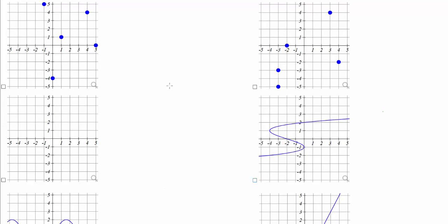So a set of ordered pairs, or a graph, is a function if there are no repeated x-coordinates with different y-coordinates. And the graphical version of that is called the vertical line test.